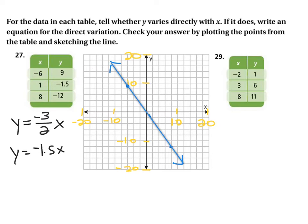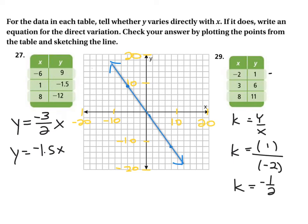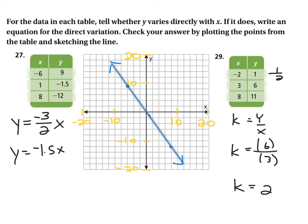For problem 29, we do the same idea. We divide y by x to find k. In this particular case, the first pair gives k equals 1 divided by negative 2, or negative one half. For the second pair, k equals 6 divided by 3, which gives us 2. That's not negative one half, so it's not going to work.